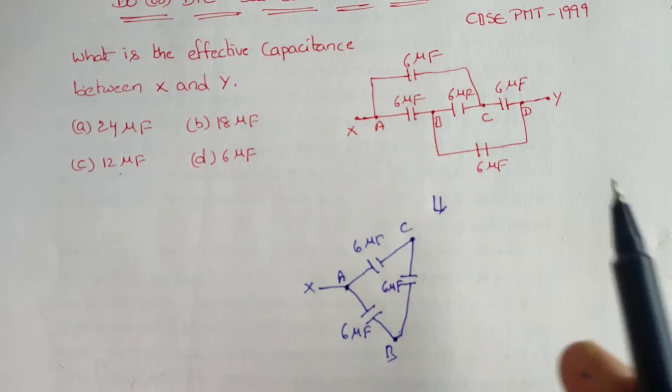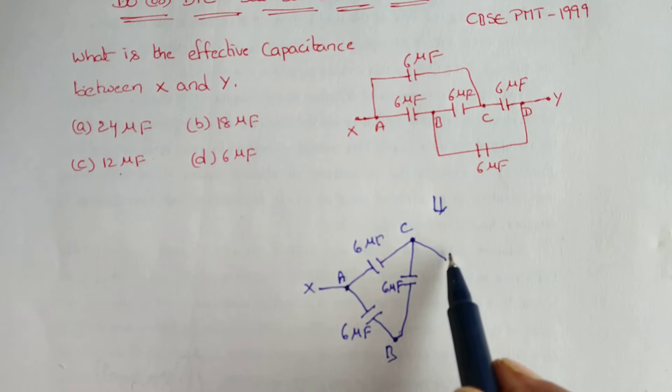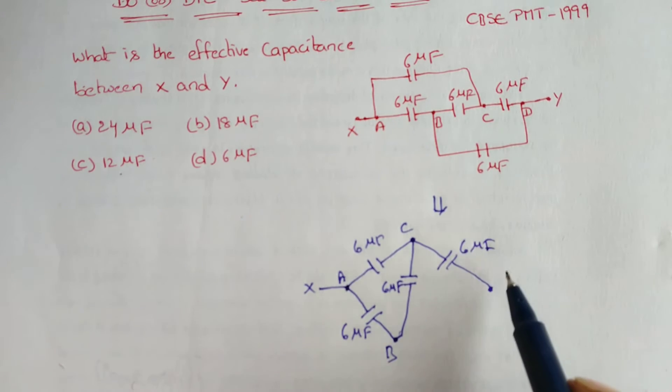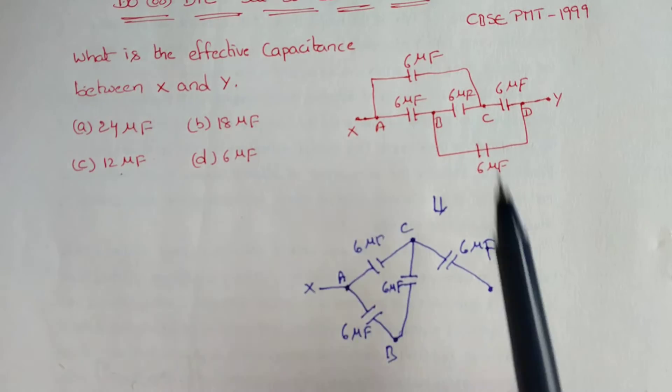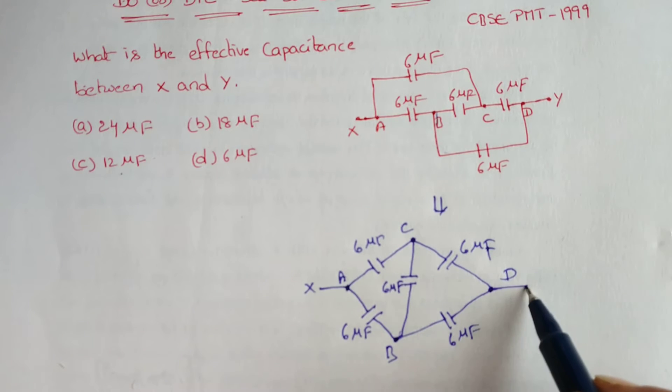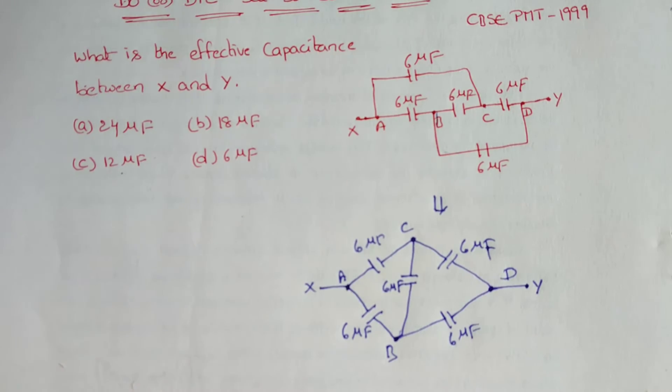And C to D, one capacitor is present, also 6 microfarad. This is D. And B to D is also one capacitor, 6 microfarad. And D to Y. Like this we have to rearrange the circuit diagram.